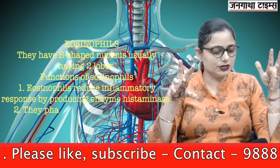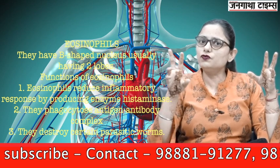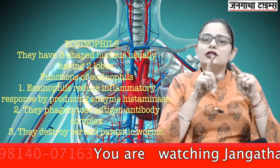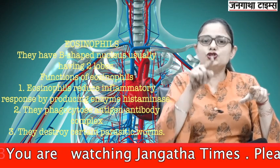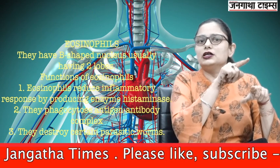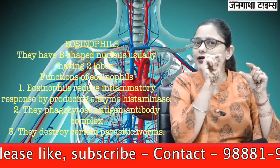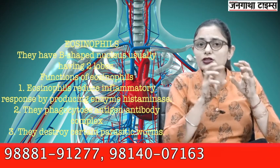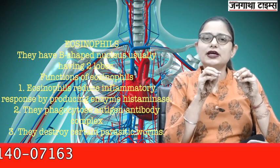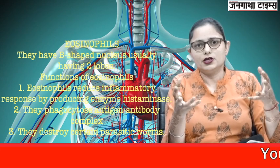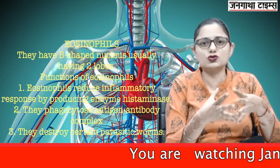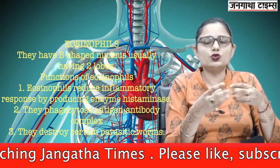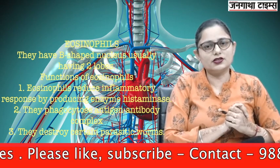The second type of granulocytes is eosinophils, which form around 1 to 4% of total leukocytes. They have a bilobed nucleus — two lobes giving a shape resembling the letter B — held by a thin strand, and again lots of granules. These granules are rich in lysosomes, which are digestive enzymes that kill unwanted particles.